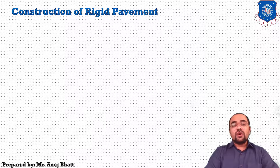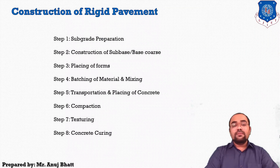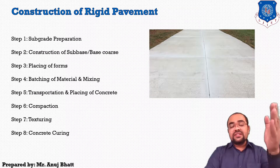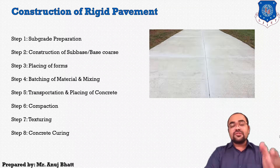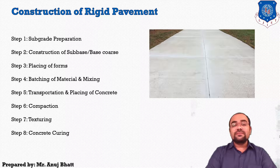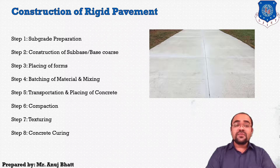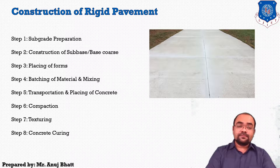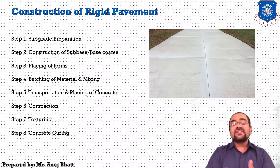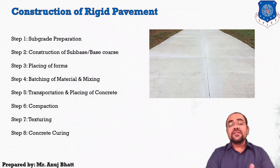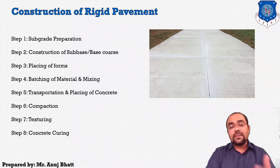The construction of rigid pavements involves different steps. The first step is preparation of the subgrade. Next, after the subgrade, we have to prepare the subbase or base course. In rigid pavements, we should not necessarily construct both base and subbase course.